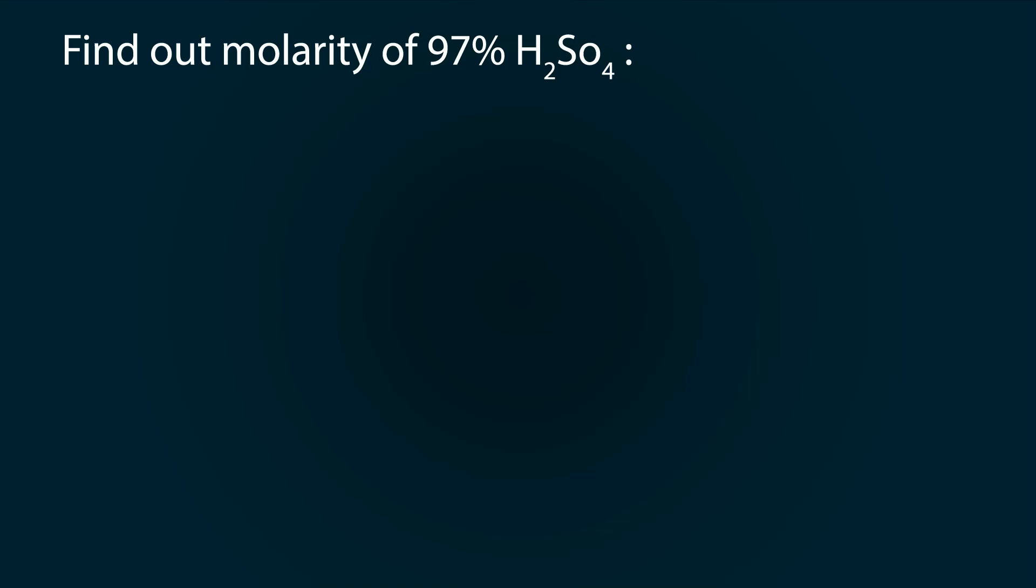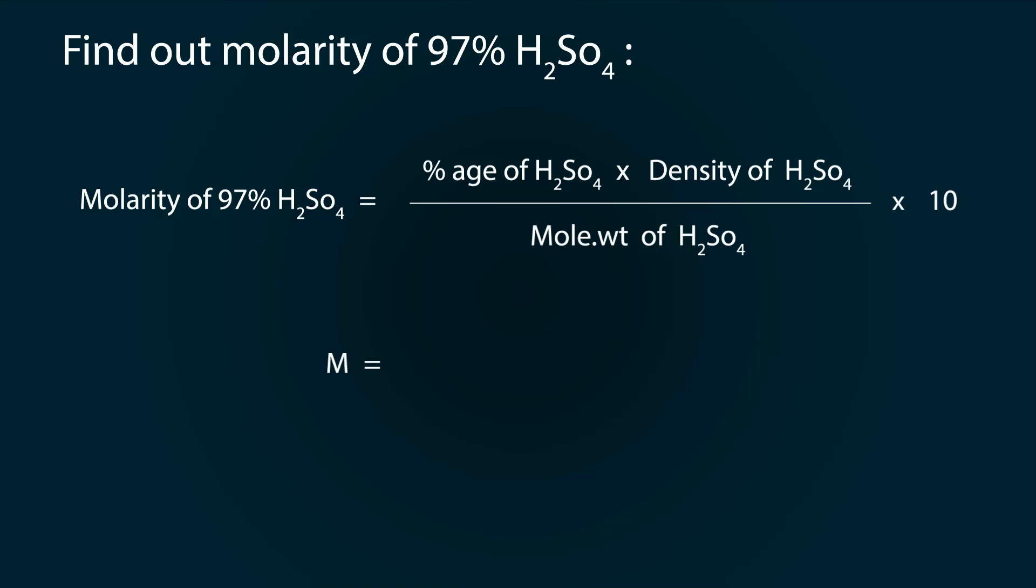Now let's find out the molarity of 97% H₂SO₄ by using the formula: molarity equals percentage of H₂SO₄ multiplied by its density, divided by its molecular weight multiplied by 10. Adding the values: 97 × 1.84 ÷ (98 × 10), you will get the molarity as 18.2.